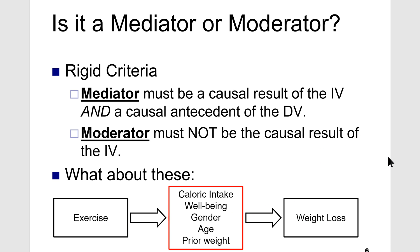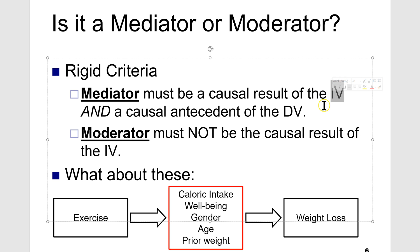Again, that's how you determine if something is a mediator or a moderator. You look to see: can it be the causal result of the independent variable? If it can be, then it is not a moderator — it is probably a mediator. If it cannot be the causal result of the independent variable, then it cannot be a mediator; it is probably a moderator or maybe a control variable.